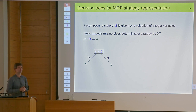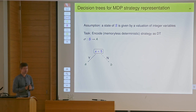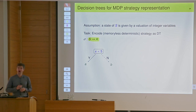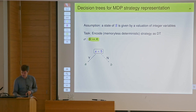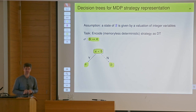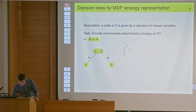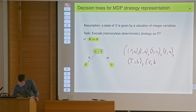What I want to do is take the strategy, which is a list of all the decisions, and encode it as a decision tree. So if my strategy assigns an action to every state, a possible decision tree might say: is the variable X smaller than 5? If yes, then play action A. If no, then play action B. You will probably agree that this is certainly better than the list basically telling you 1A, 2A, 3A, 4A, 5B, 6B, etc.